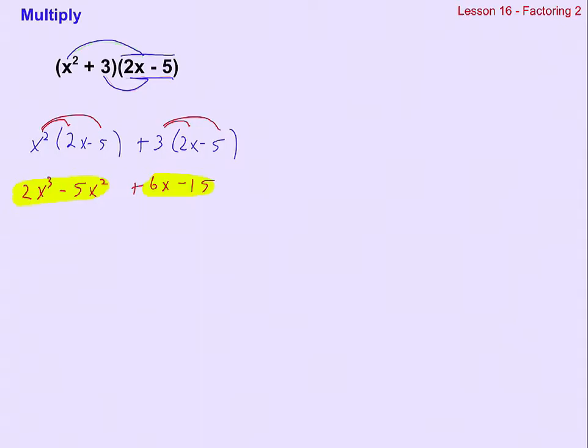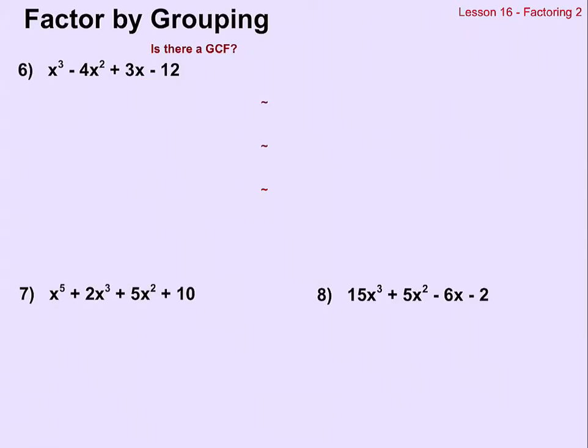This is all to set up what we're going to do in the next problem, which is go in the other direction. We're going to start with a cubic polynomial and factor it back to the two binomials. So this method is called grouping. The idea behind grouping is to look for a GCF, and you should always look for a GCF in the whole thing first. I've got 4 and a 12, but I don't have that in every term, so there's no GCF here. There's x, x, x, but no x in that one, so no GCF.